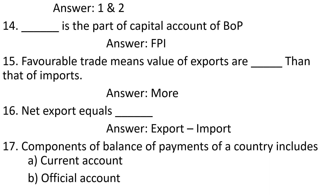Question 14: Dash is the part of capital account of BOP. Answer: FPI. Question 15: Favorable trade means value of exports are more than that of imports. Question 16: Net export equals. Answer: Export minus import.